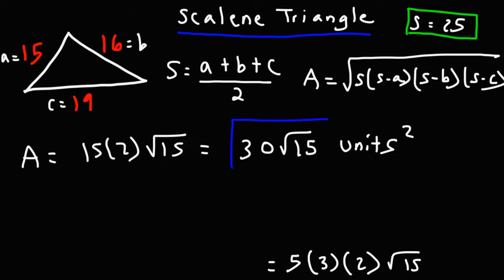So that's the exact answer, but let's get an approximation. So let's turn that into a decimal. 30 times the square root of 15 is approximately 116.19, if you round it, square units.